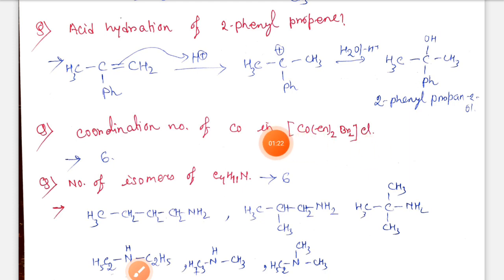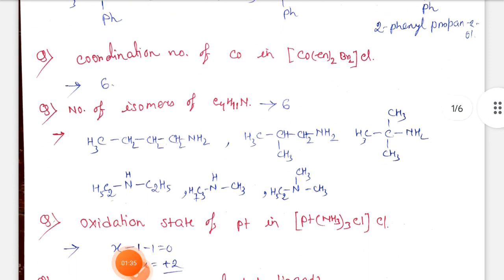Number of isomers of C4H11N - this is an amine structure. The total isomers are 6. These three are primary amines, these two are secondary amines, and this is tertiary amine. So all six structures are possible here.